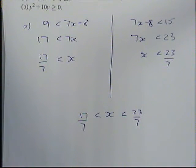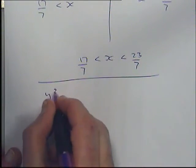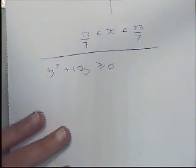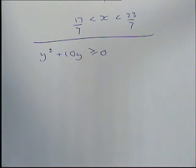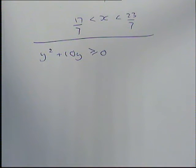Part B, OK, part B, we had to solve y squared plus 10y is greater than or equal to 0. It's a quadratic. It's only got two bits. It's got a y squared bit and a y bit. What could we do on this one?